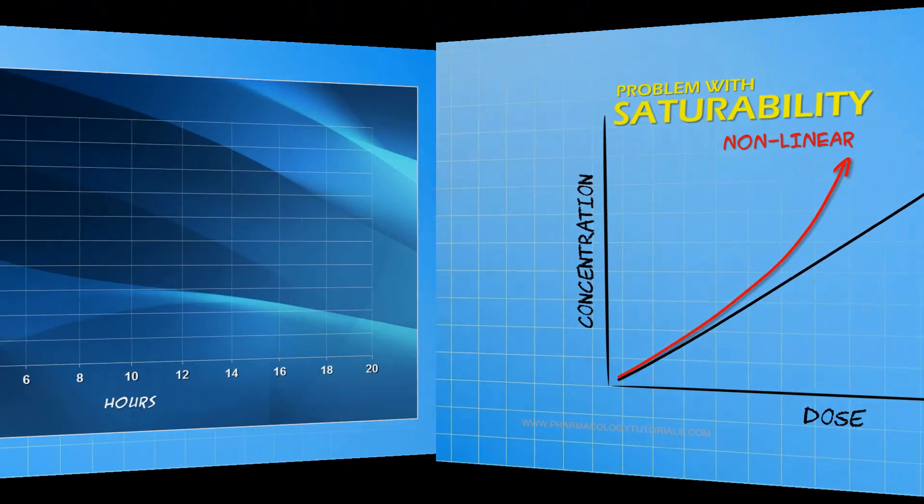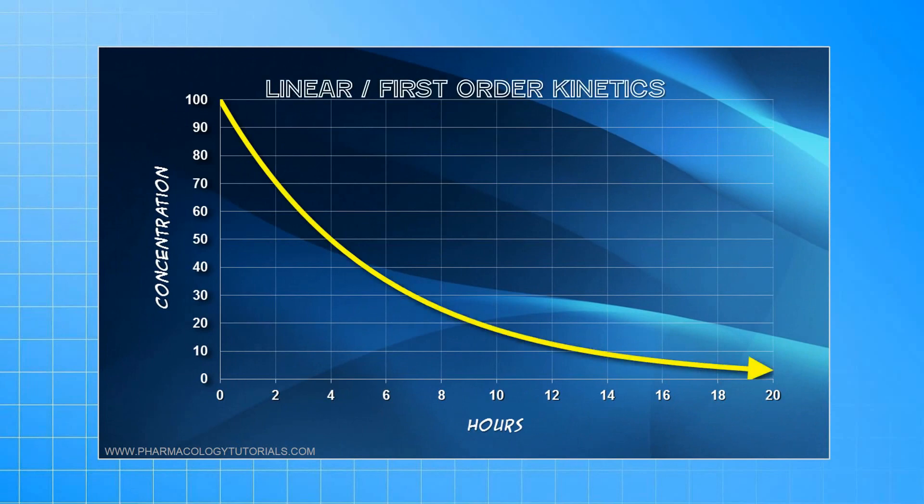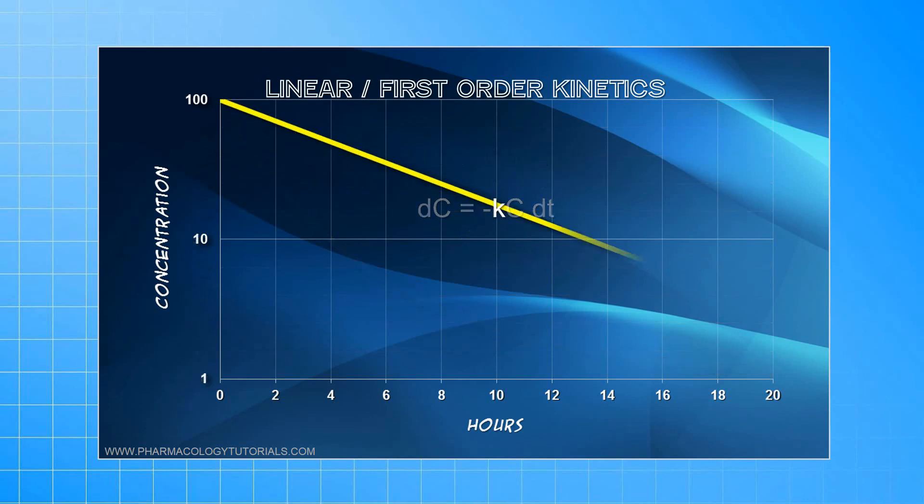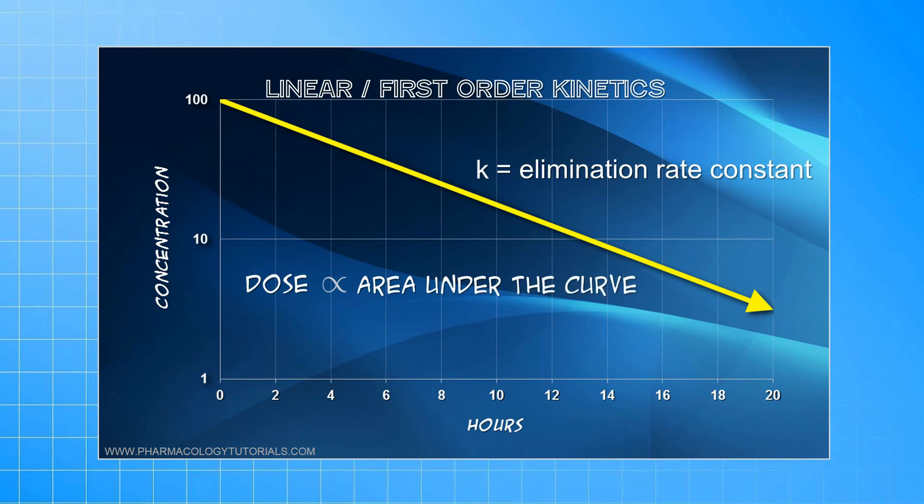You have seen this graph before. In the linear pharmacokinetic model, the elimination rate is concentration-dependent and clearance is a constant. On a semi-log plot, you get a straight line where the slope is the elimination rate constant. Under these circumstances, there is a direct relationship between the dose and the area under the curve. As you increase the dose, the area under the curve increases proportionately. If you have to make dosage adjustments, this is a relatively easy task.